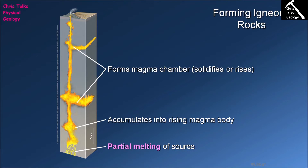A magma chamber is essentially a body of magma under the surface. Magma chambers often form in response to some kind of blockage — a layer of rock the magma can't get through easily — and so the magma begins to pool behind that obstruction. Eventually the magma can do one of three things: stay there and solidify into solid rock, burn its way through the obstacle by melting it, or find a path around the obstacle and continue its journey upward.